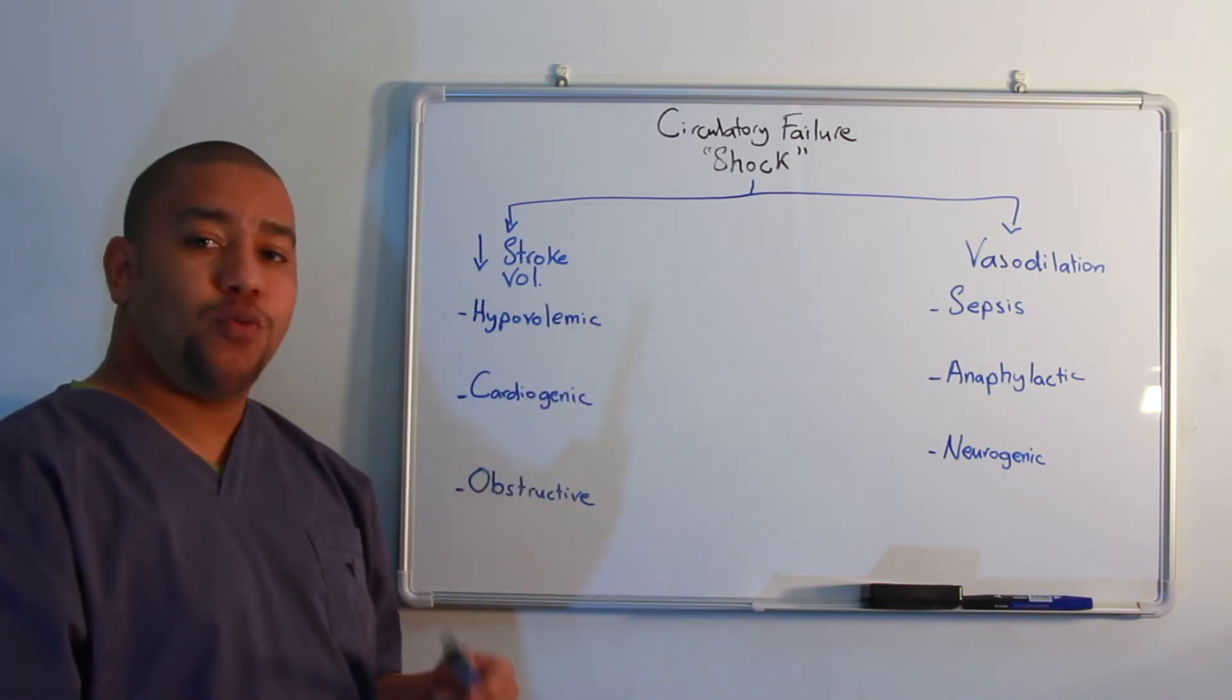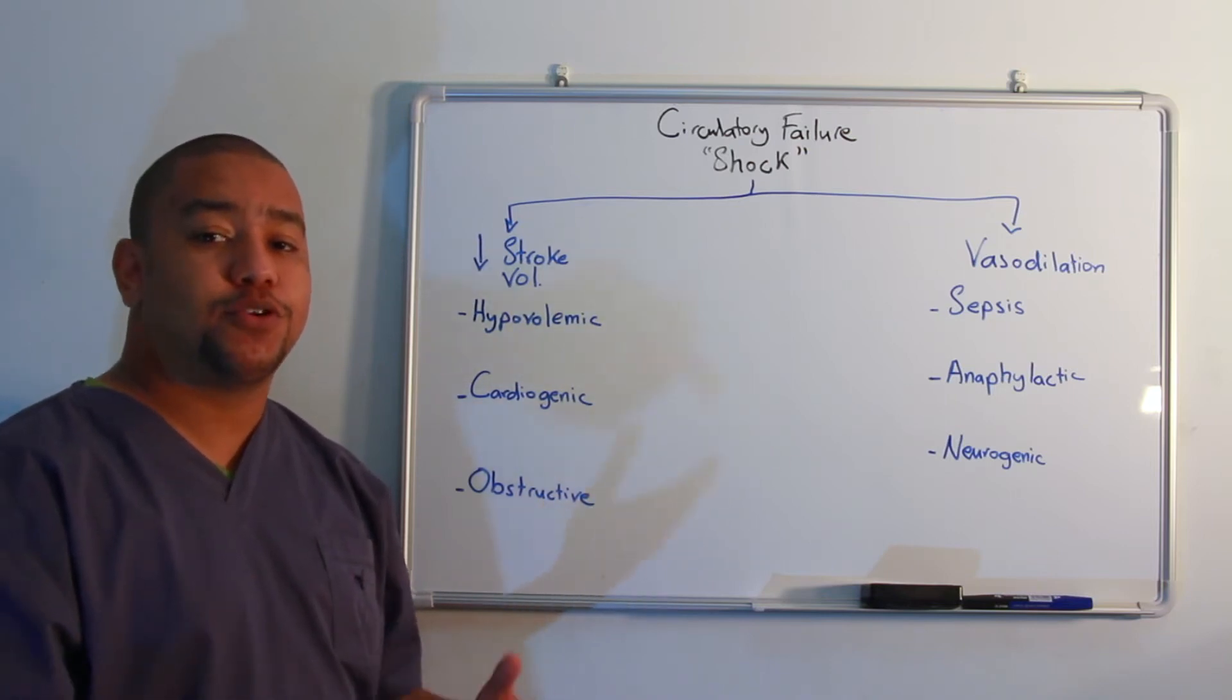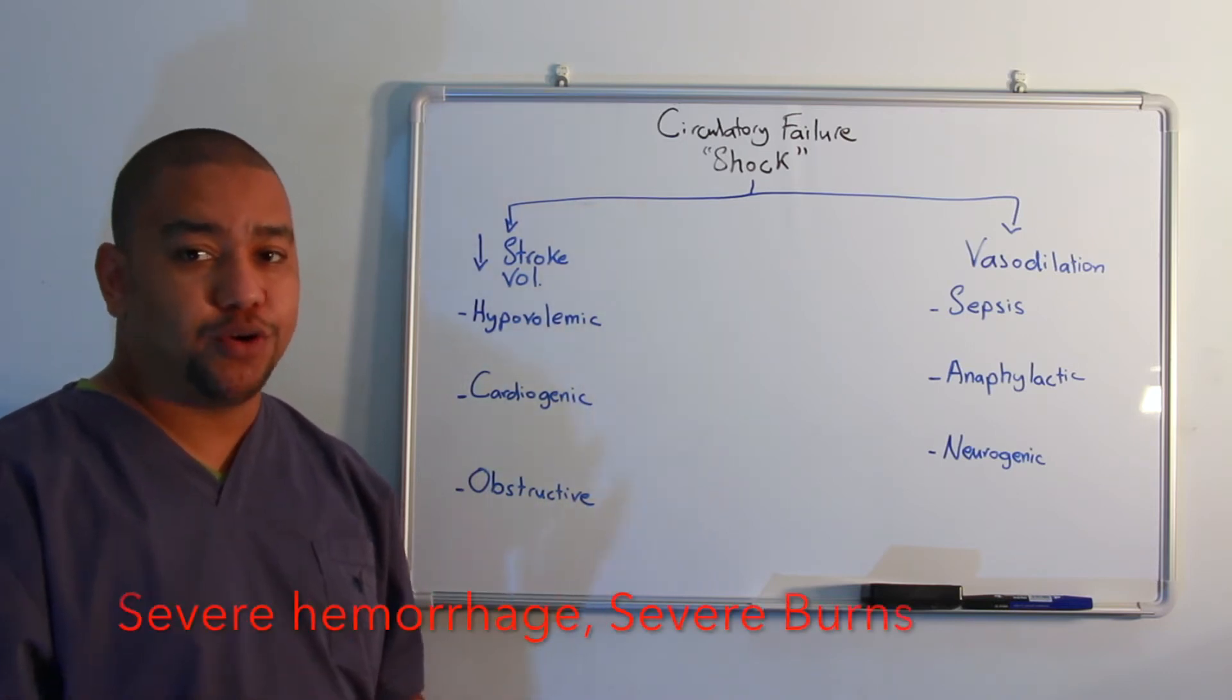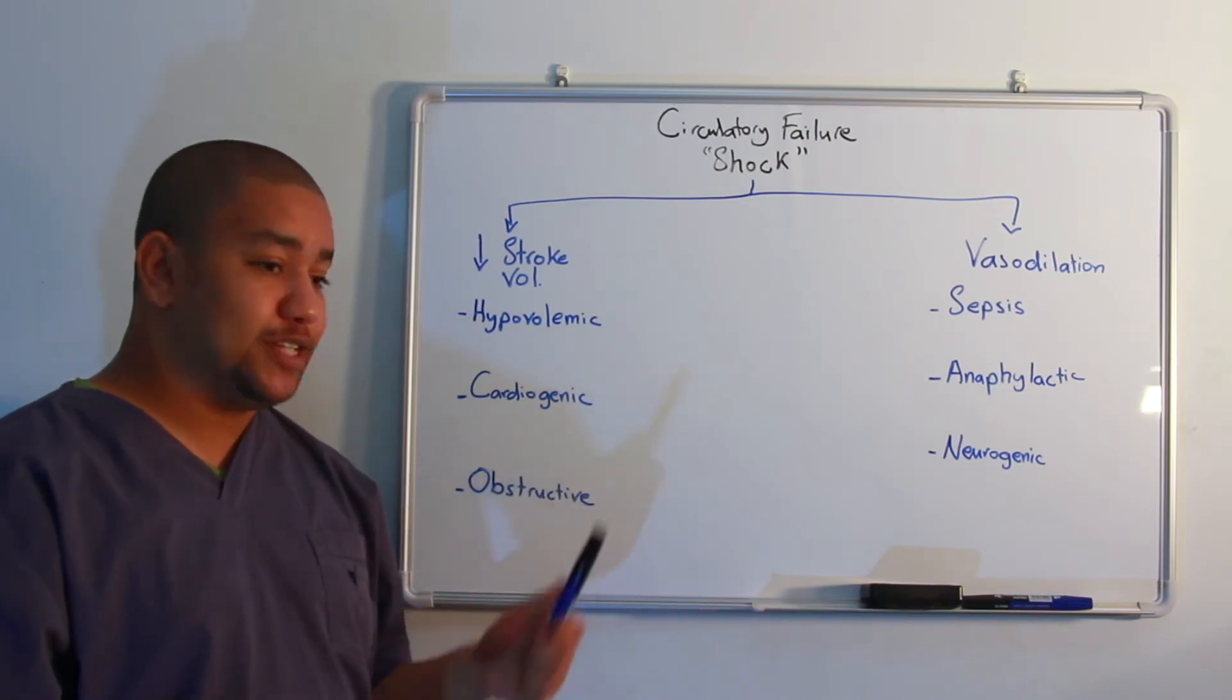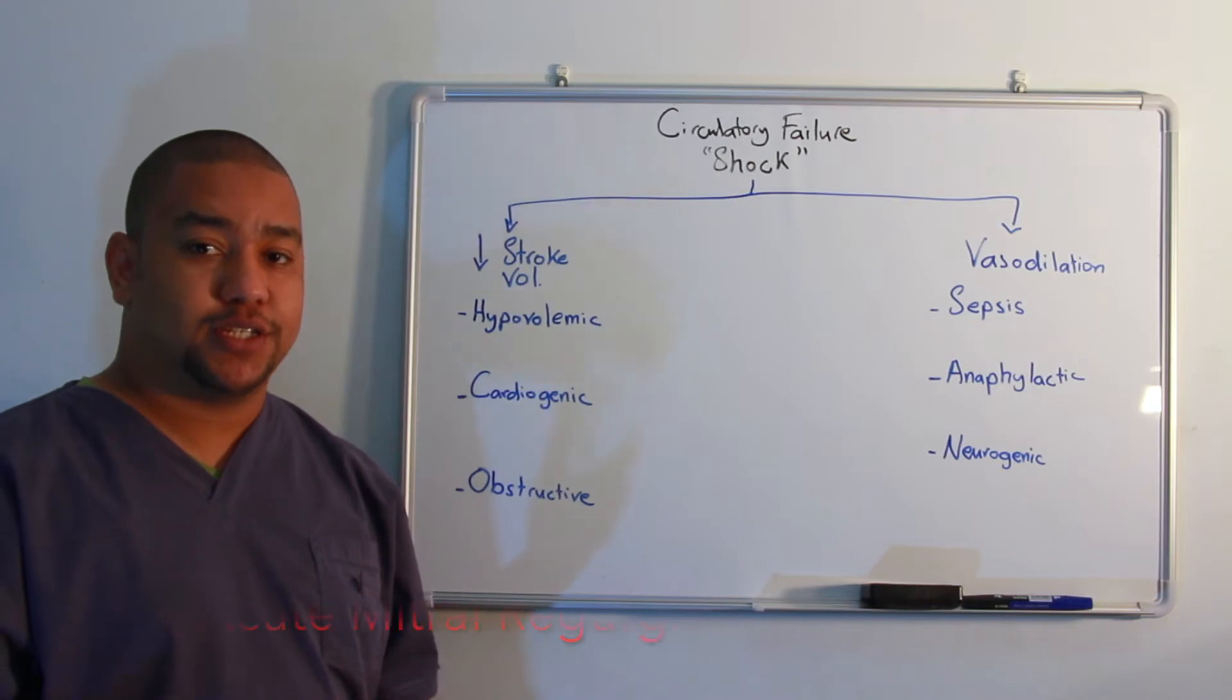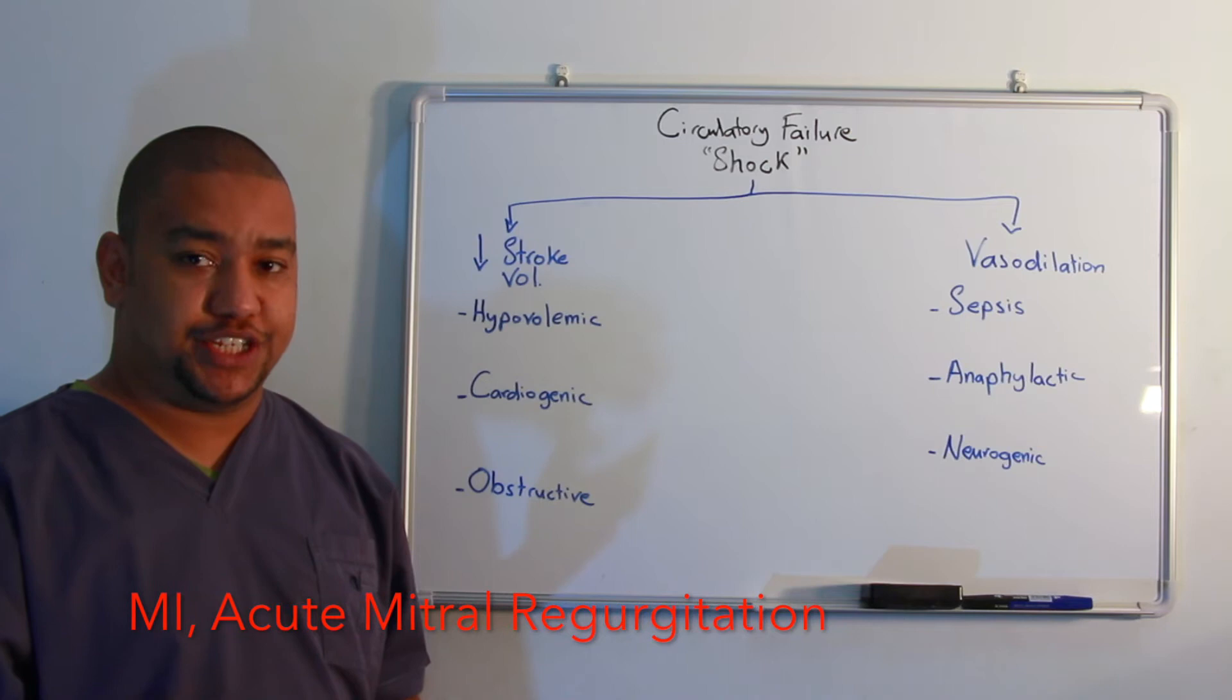In a decreased stroke volume, one of the causes is hypovolemic shock. Hypovolemic shock occurs when anything provokes a decrease in blood volume, such as hemorrhage or severe burns. Cardiogenic shock is when there is severe cardiac impairment, such as in myocardial infarction or acute mitral regurgitation.